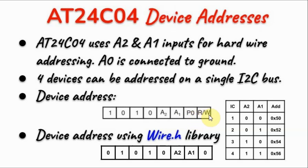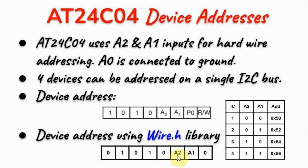The last bit is read or write — for read the value is 1, and for write the value is 0. The device address using the wire library within the Arduino IDE becomes this value here. The read/write bit is taken care of by the library, so we need to only be concerned with the values of A2 and A1.